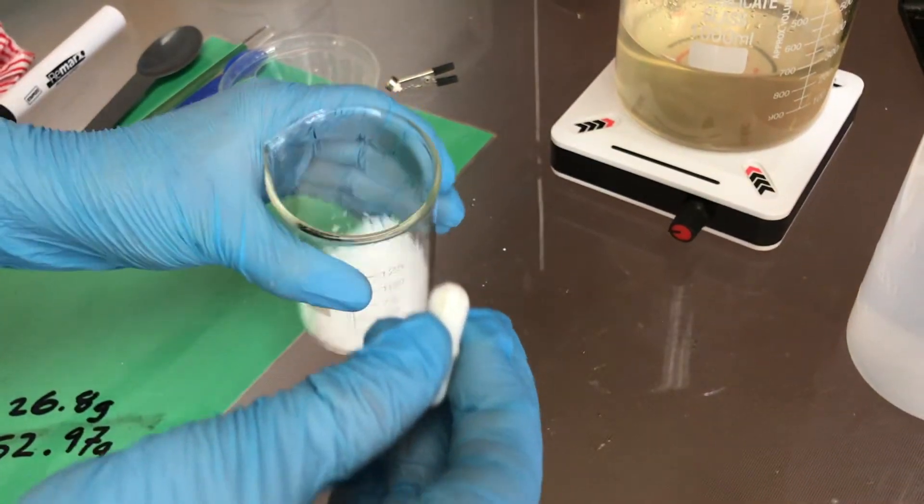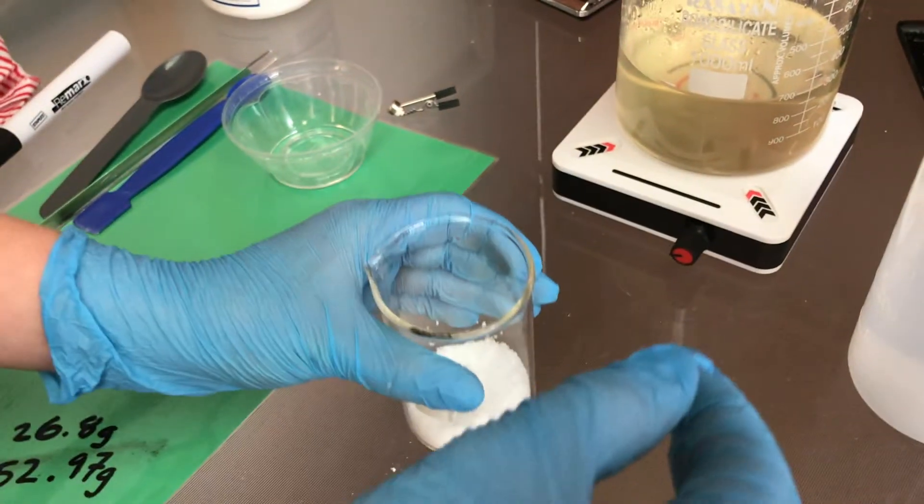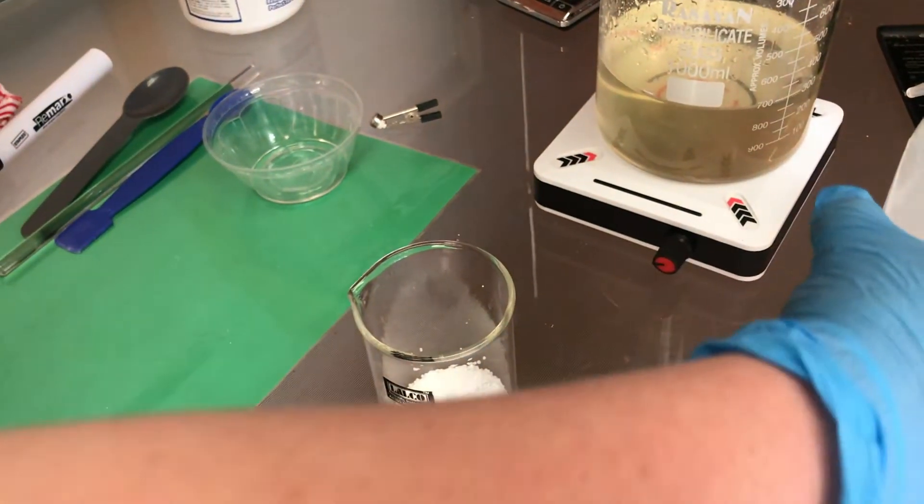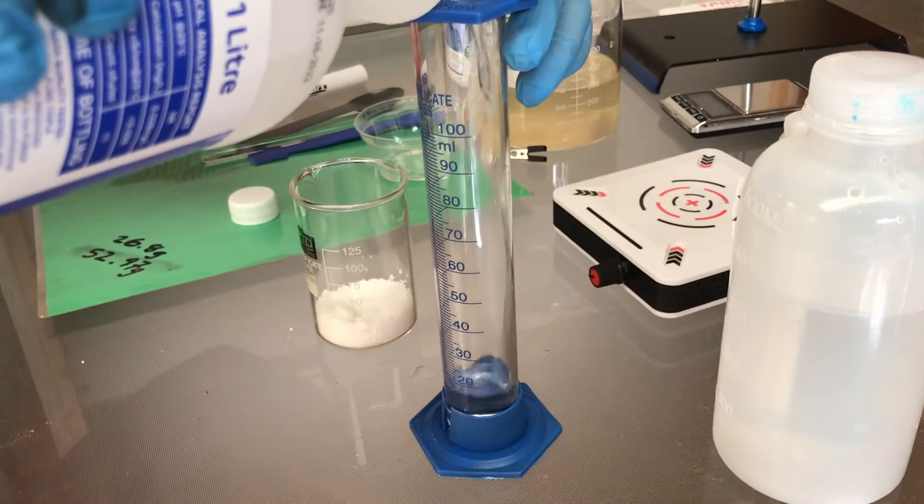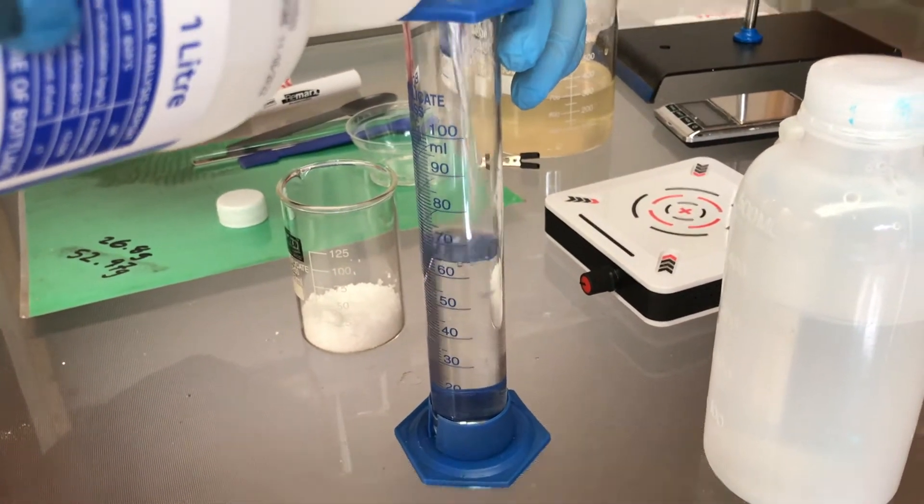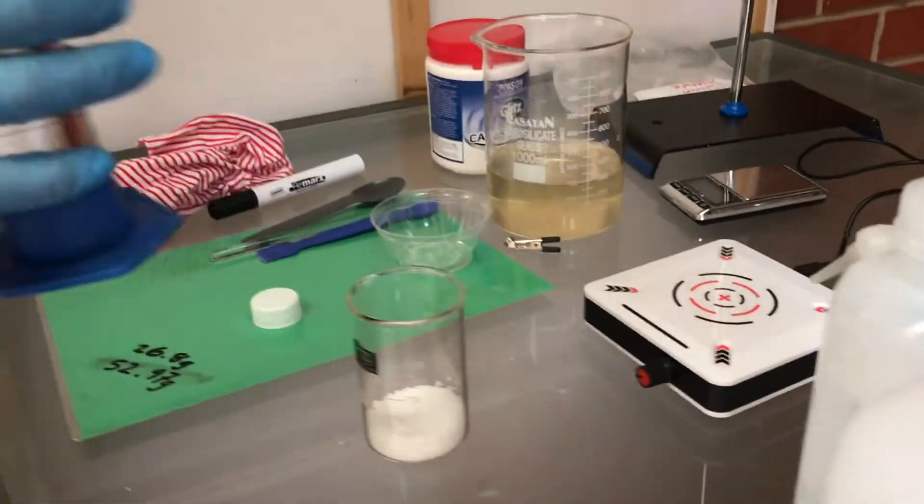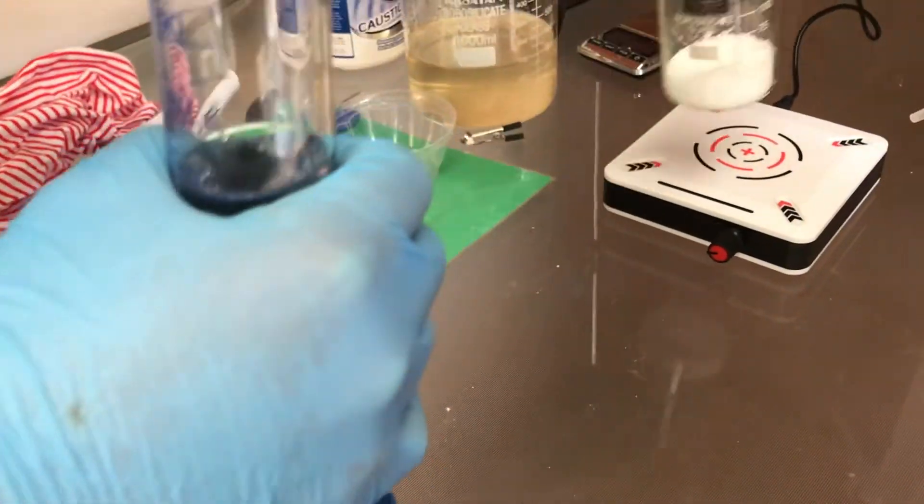I am now going to dissolve 26.8 grams of sodium hydroxide in 70 milliliters of distilled water. 70 milliliters of water is way more than I need because the solubility of sodium hydroxide at 25 degrees is 50 milliliters.